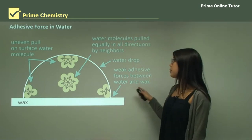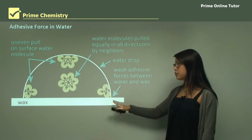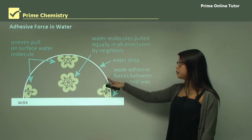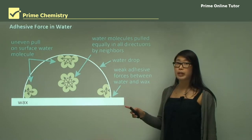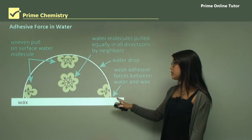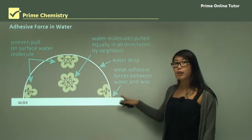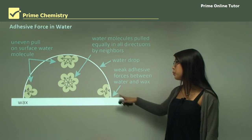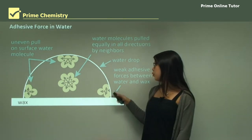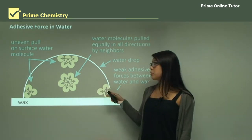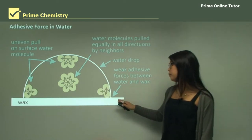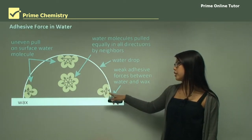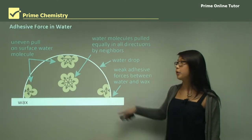We also have adhesive forces between the wax and the water, but because these are weaker, they don't thin out the water droplet. All the water molecules are pulling inward, overcoming the attractive forces between the wax and the water, so the droplet maintains its spherical shape.